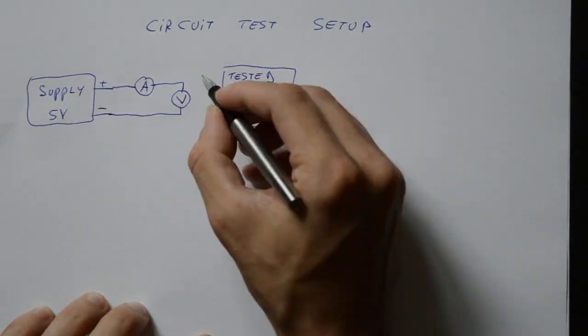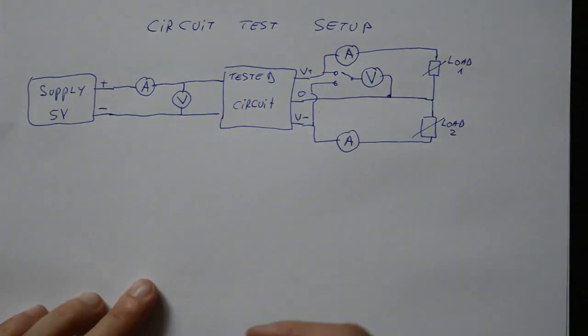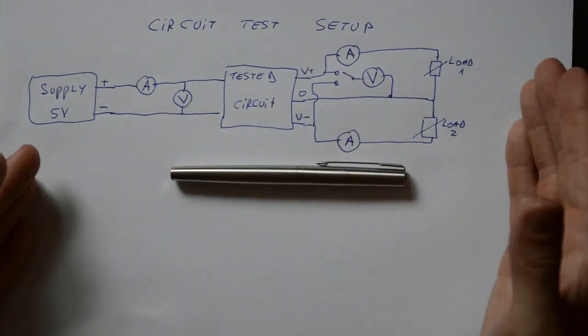Now, this is the setup I will be using. I'll just connect my circuit to all the voltmeters and ammeters. And this voltmeter I'll be switching between the outputs, and hopefully, there will be no smoke today.